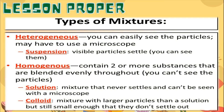The two types of mixtures are heterogeneous and homogeneous. In a heterogeneous mixture, you can easily see the particles — one type is suspension, where the particles are visible. On the other hand, homogeneous mixtures contain two or more substances blended evenly throughout. Two categories of homogeneous are solution — where the mixture never settles and can't be seen with a microscope — and colloid, which has larger particles than a solution but still small enough that they don't settle out.